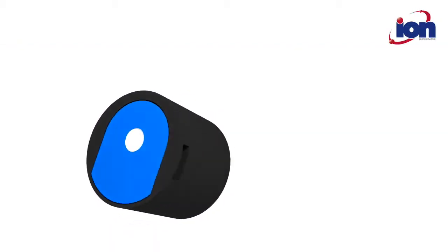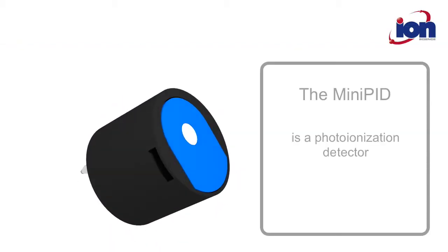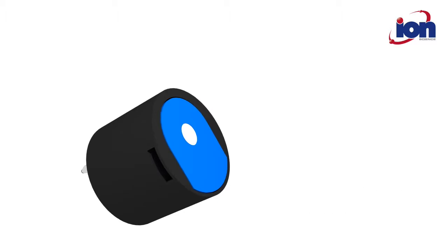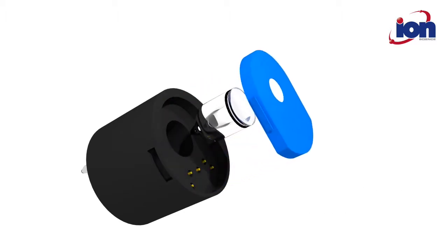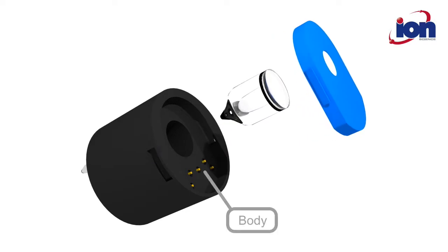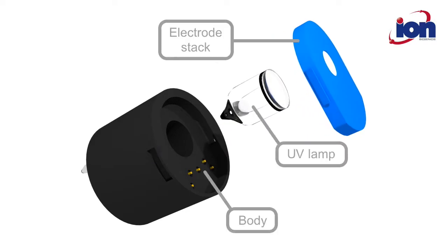The IonScience Mini PID is a photoionisation detector that detects a wide range of VOC gases. It consists of three main components: the body, the UV lamp, and the electrode stack.